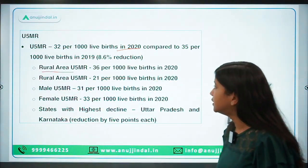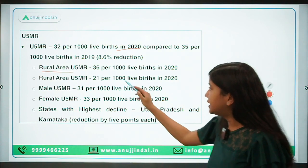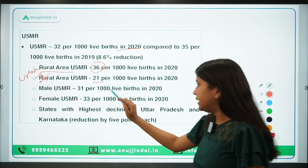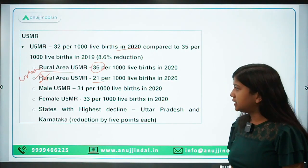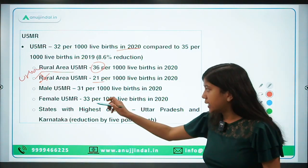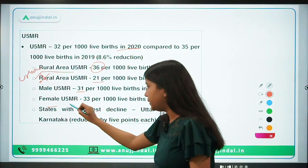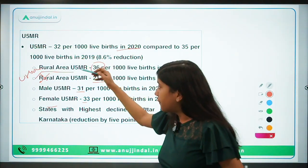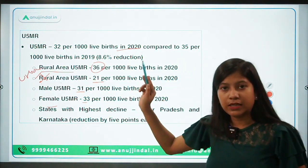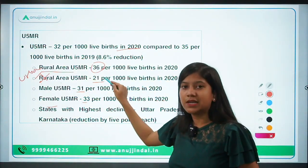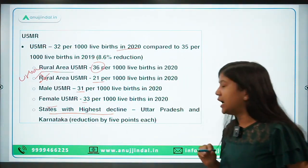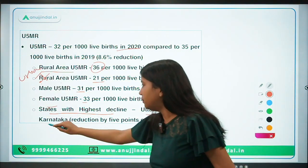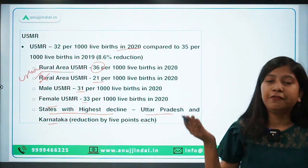In rural areas, the under-five mortality rate is 36, and in urban areas it is 21 per thousand live births. In females, it is slightly higher than in males. There is a stark difference between urban and rural areas. Coming to the states with the highest decline: both Uttar Pradesh and Karnataka have witnessed a decline of five points.